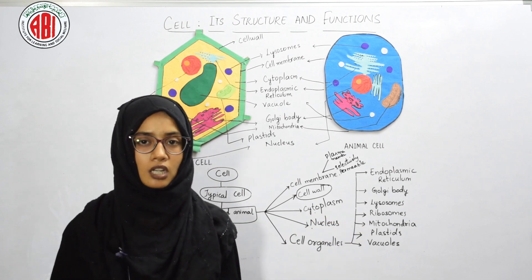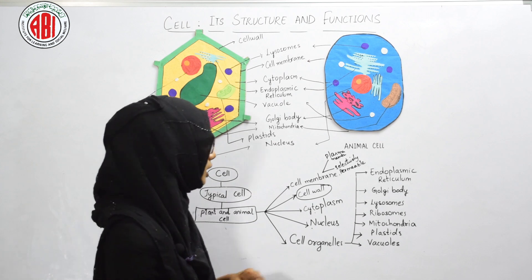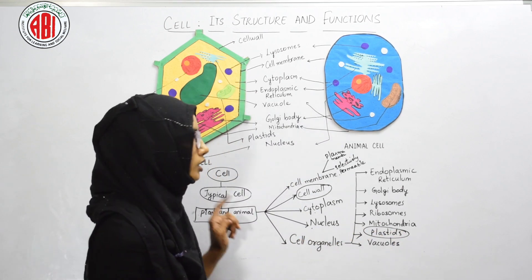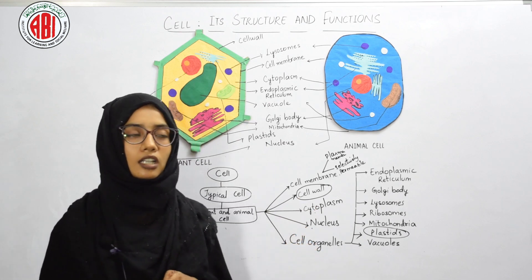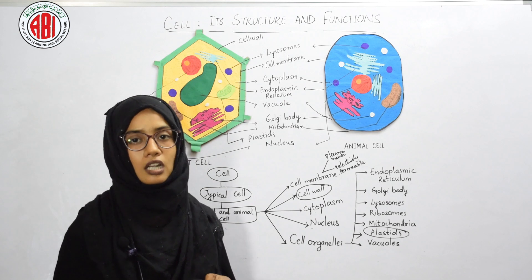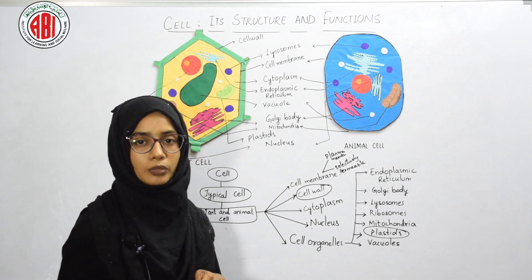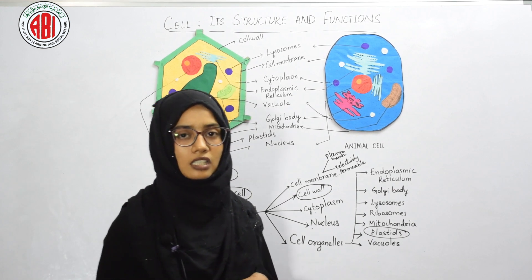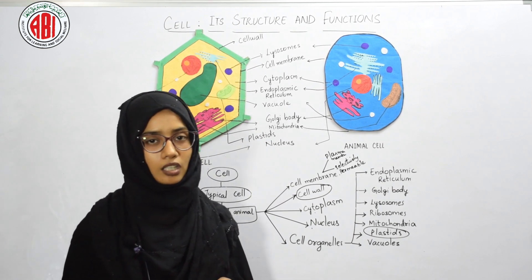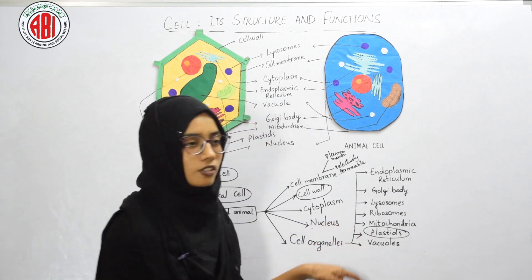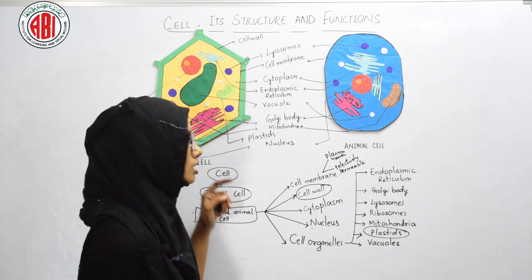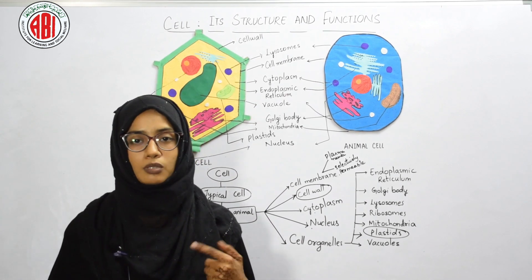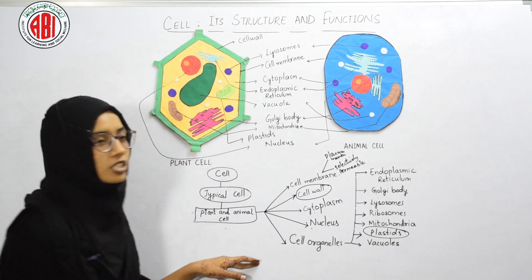Plastids are present only in plant cells and are of three types: chromoplasts (colored), leukoplasts (colorless/storage), and chloroplasts (present in green parts, containing chlorophyll for photosynthesis). Vacuoles are sac-like structures — large in plant cells and small in animal cells — that are fluid-filled and help in providing rigidity and turgidity to the plant cell.